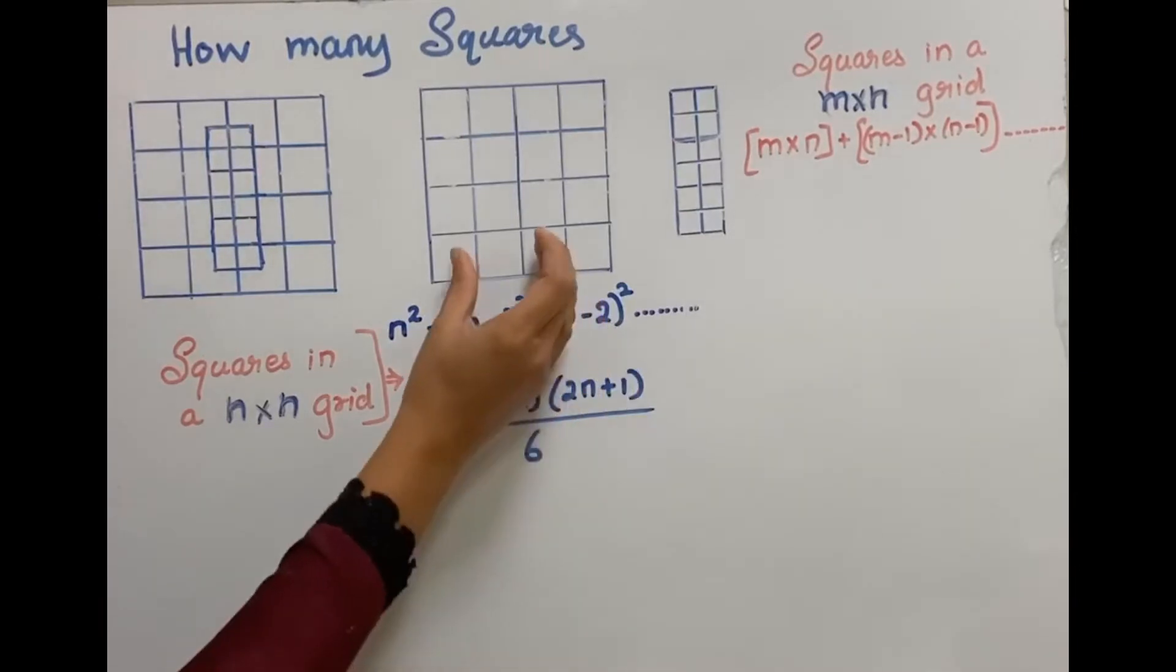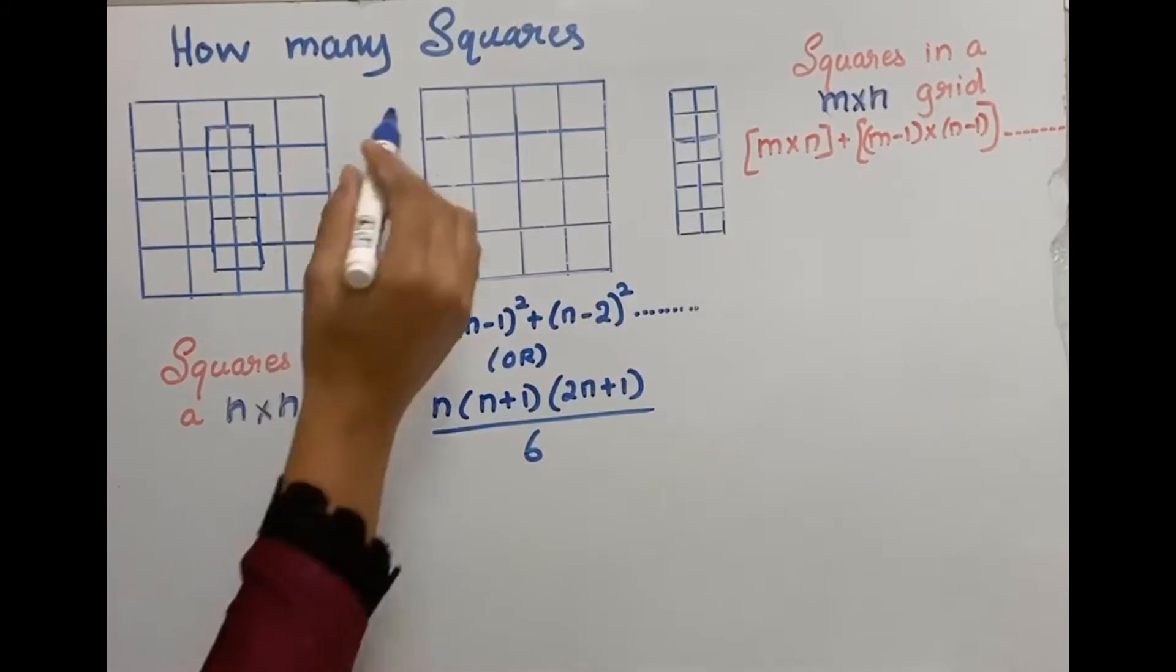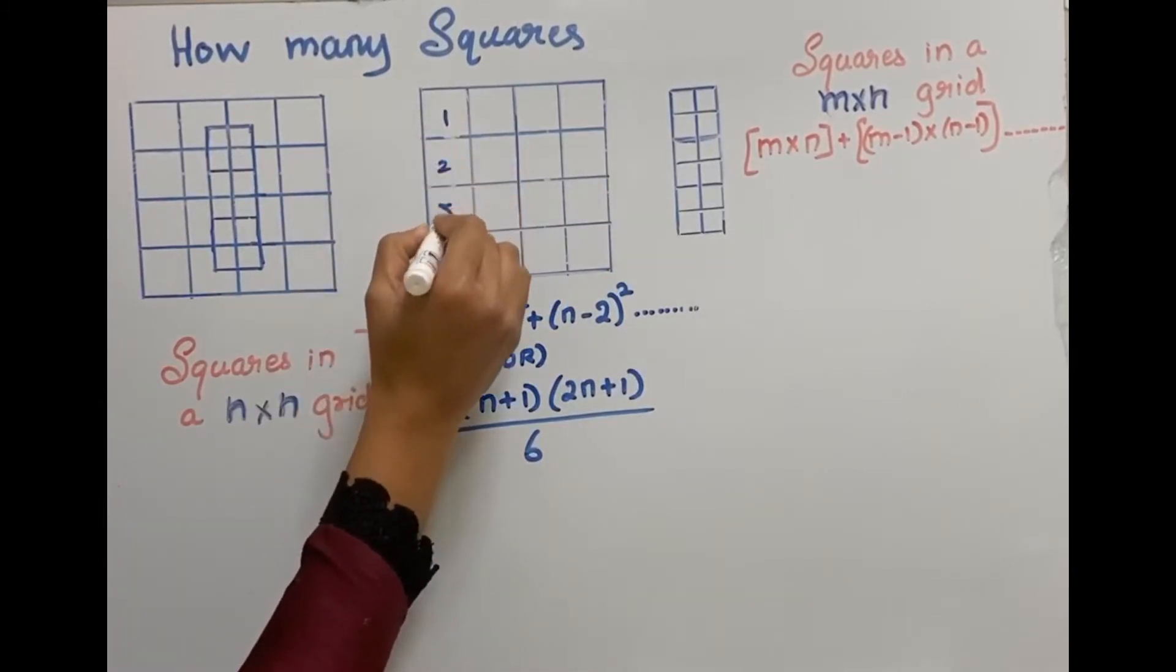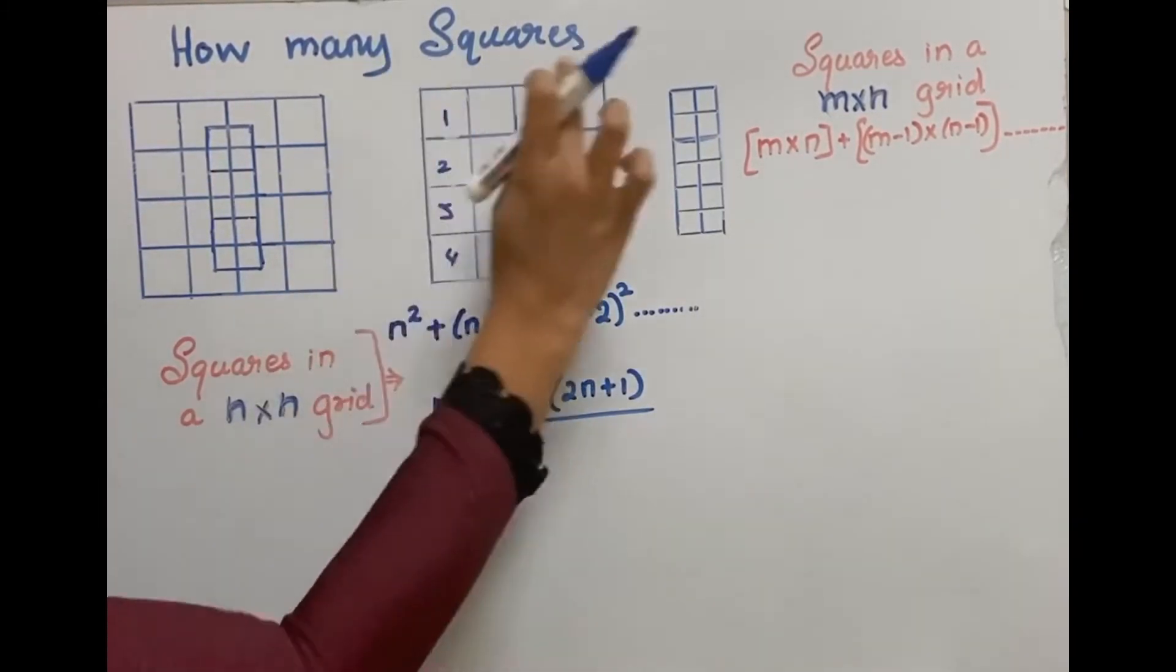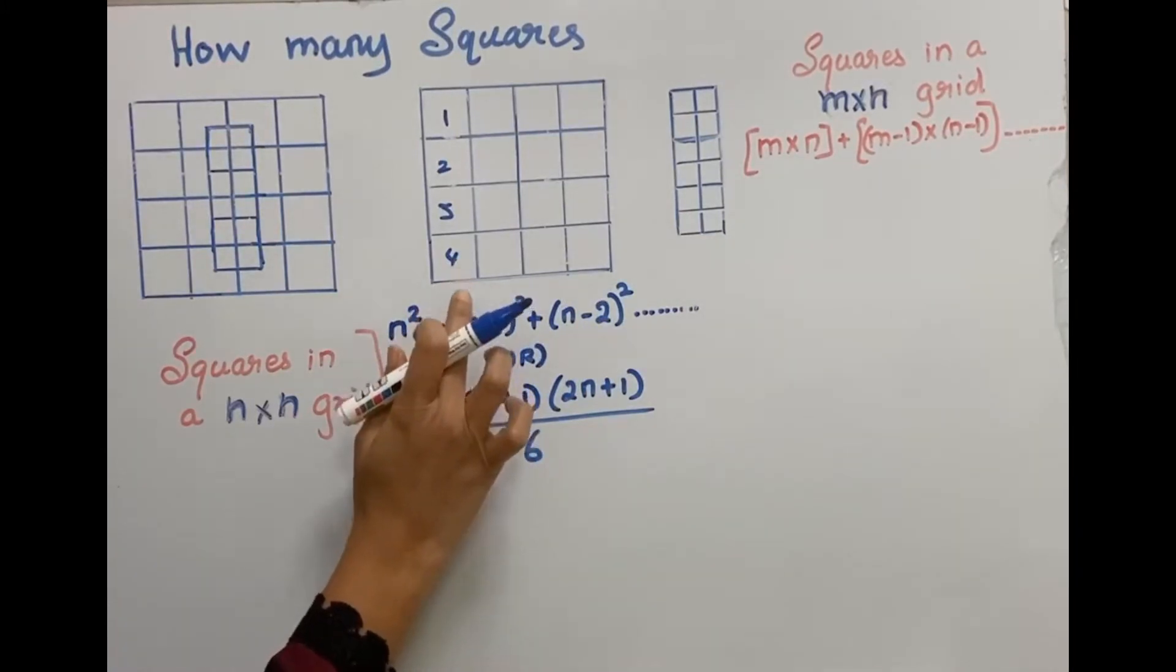First, let's count the squares in this part. It's an n into n grid, that is n is 4, 1, 2, 3, 4 squares vertical and horizontal. So it's an n into n, which is 4 into 4 grid.